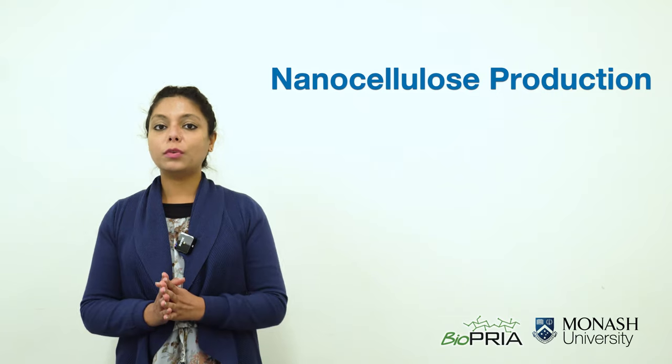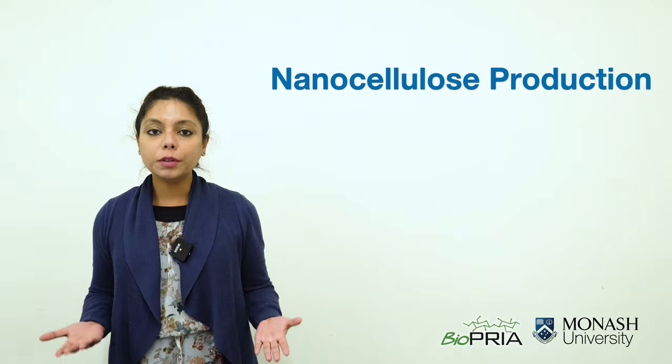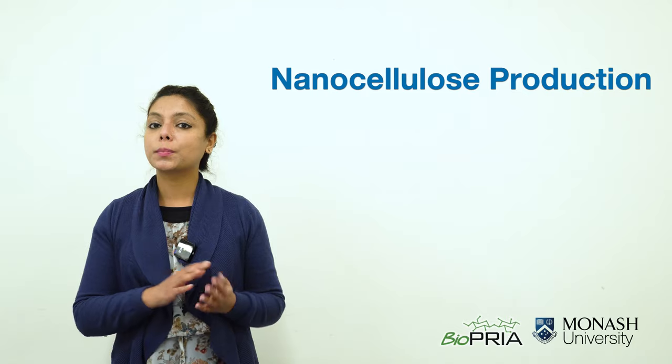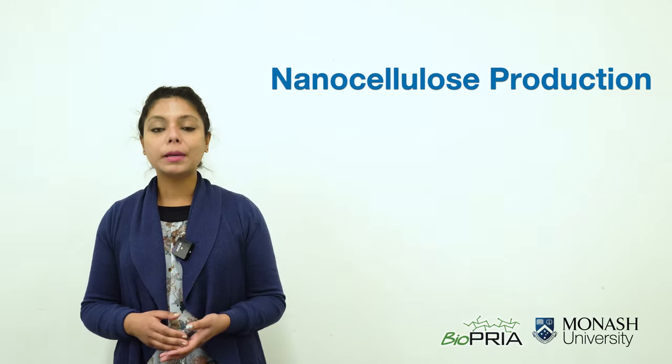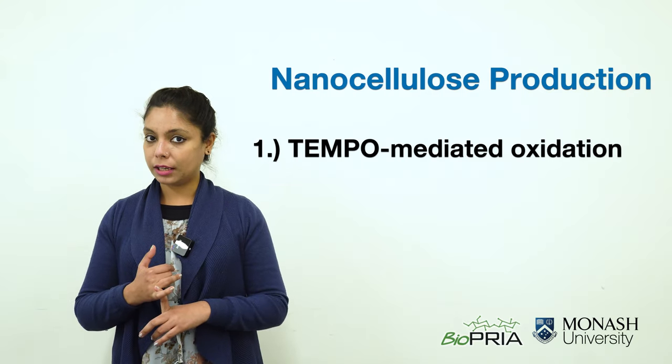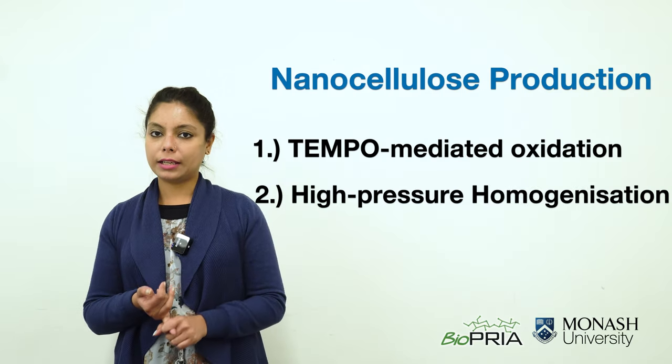In this video we are going to show you how we produce nanocellulose fiber from cellulose pulp. We produce nanocellulose fiber from cellulose pulp in two steps: first TEMPO oxidation and second homogenization.